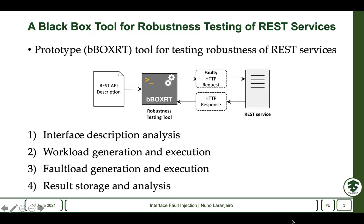The third step is very important and is the fault load generation and execution. In this step we use the workload generated in step 2 and apply faults to the requests. The idea is that a request holding a certain fault may be useful in activating some problem and triggering some failure of the service. The faults that we are using are essentially rule-based, and depending on the data types that we are sending to the services, we inject faults that are adequate to those data types.